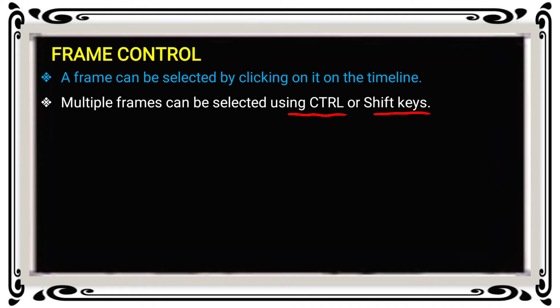Using Shift key, continuous frames are selected — for example, from a starting point to an end point. Using Ctrl key, individual frames are selected one by one, even with frames left in between. This way more than one frame can be selected using these two methods.